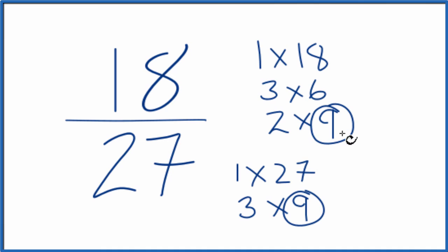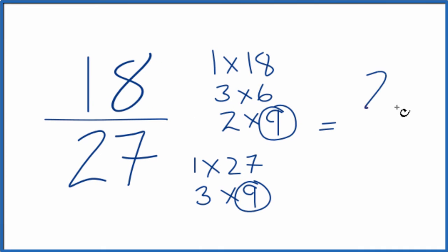So that means we divide 18 by 9 and we get 2. We divide 27 by 9, we get 3, 2/3. So we've simplified or reduced 18/27 down to 2/3.